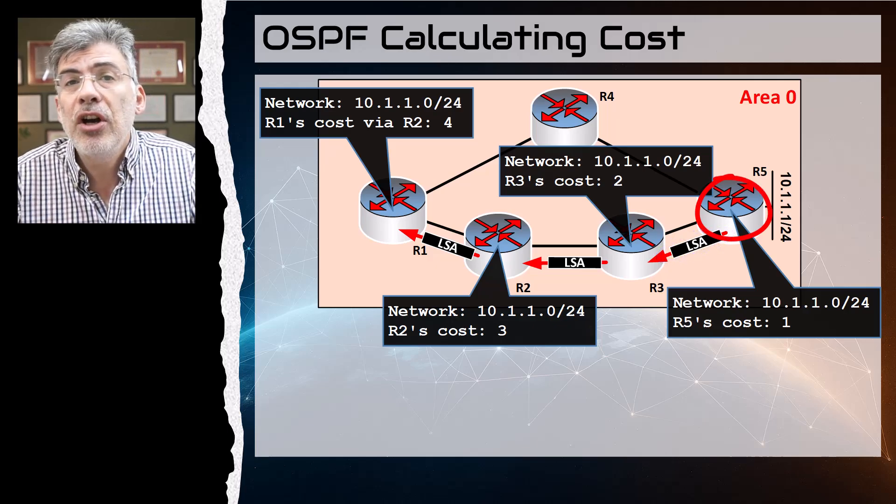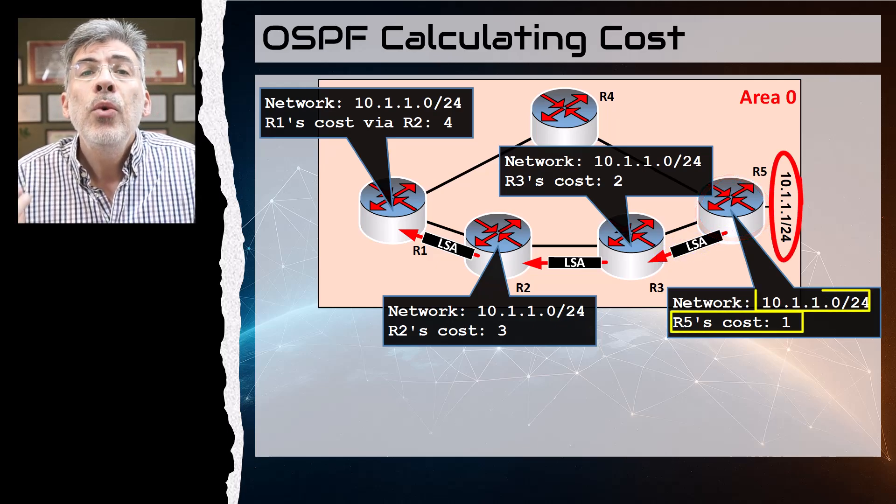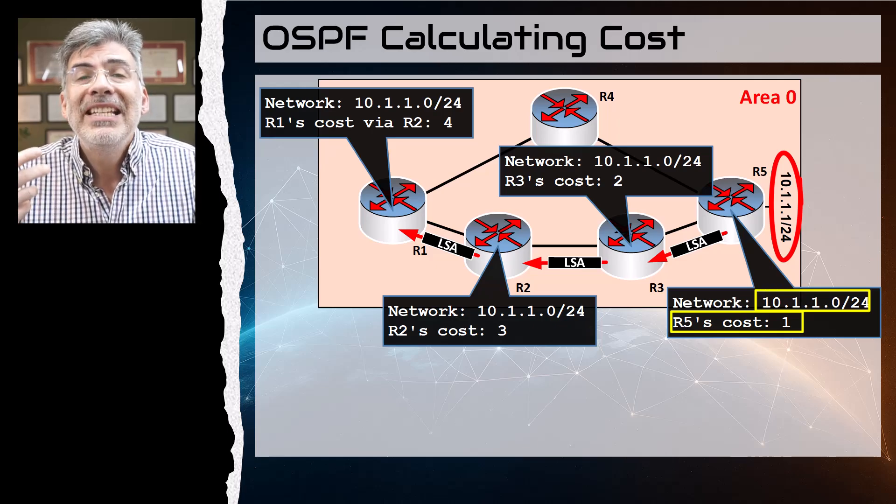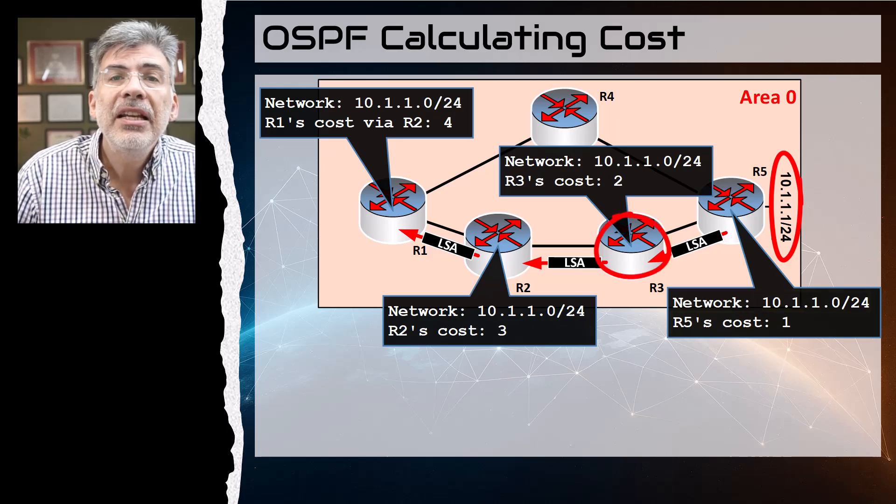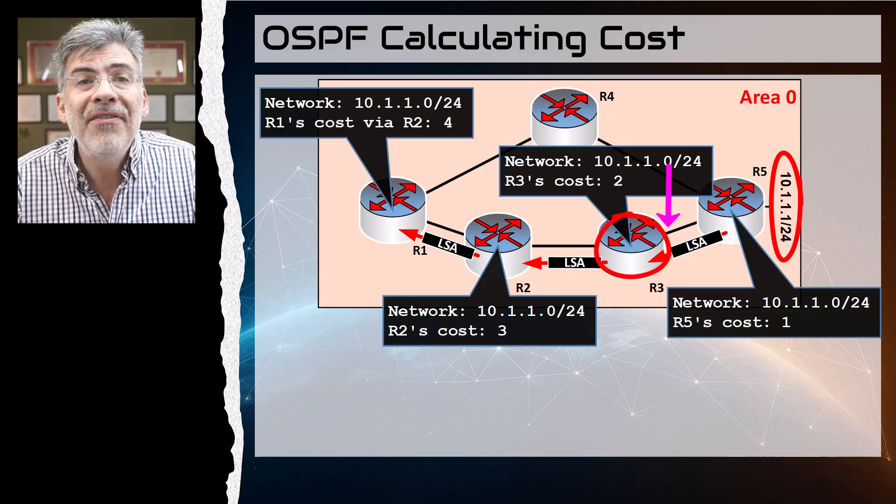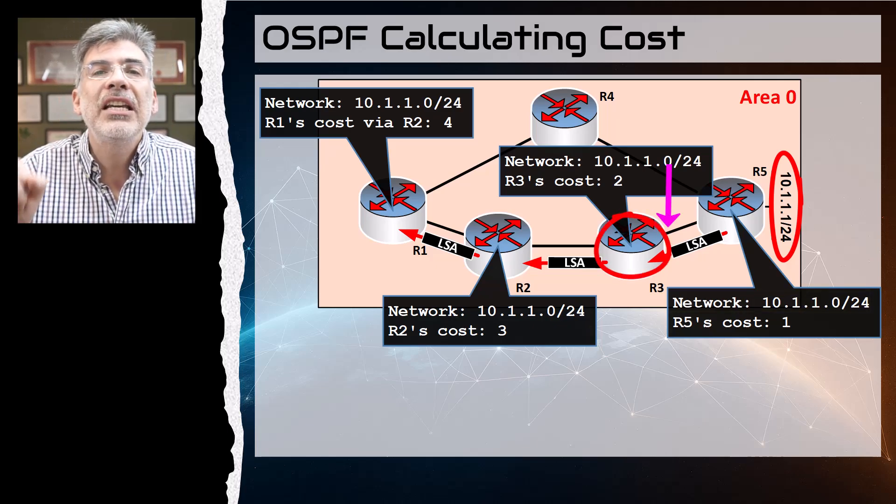What does that look like? Well, R5 sends an LSA to R3, and in that LSA it attaches a cost of one to the destination, which is the cost that R5 sees that it needs to reach the destination network.